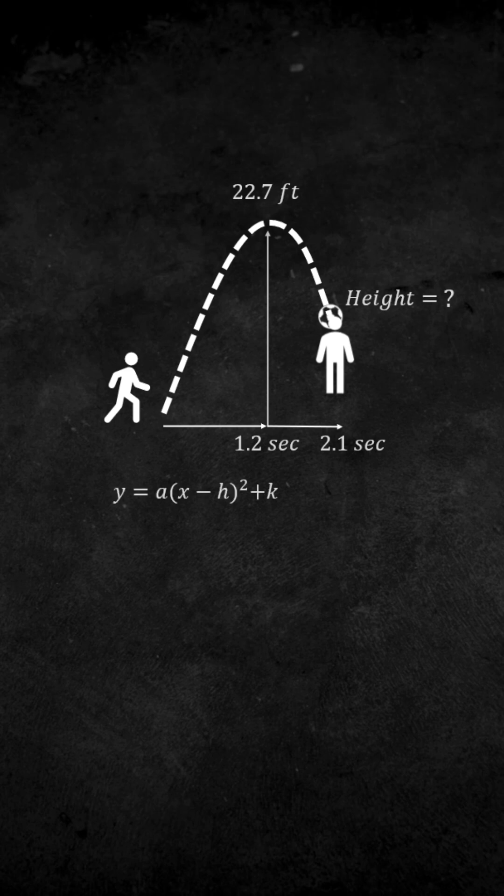we can take our vertex form quadratic equation and sub in our 1.2 seconds and our 22.7 feet into our h and k respectively in our equation. Now, we need to find out what a is.